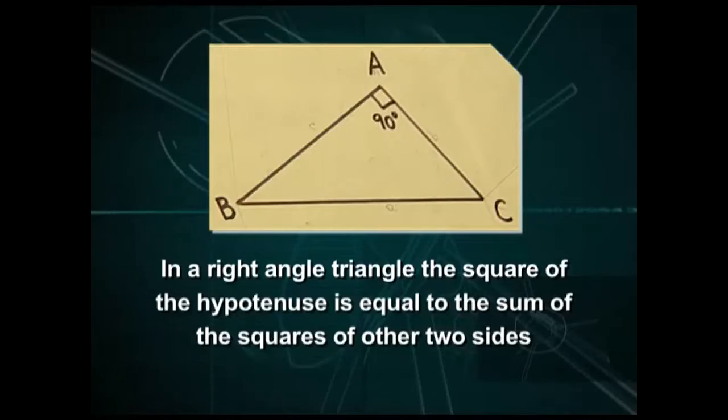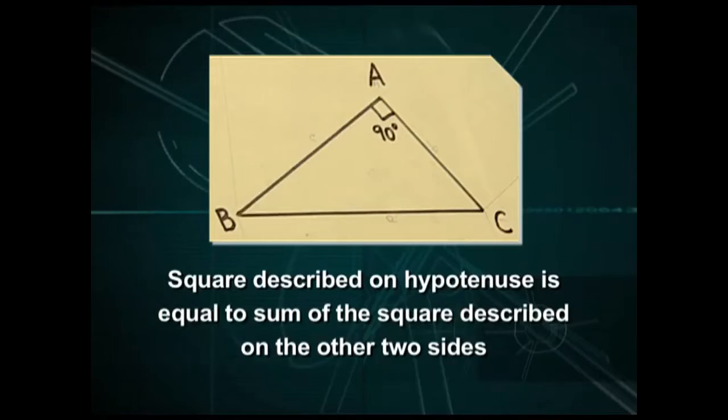Hello students, today we shall perform an activity to verify Pythagoras theorem. First, let us look into what Pythagoras theorem states. It states that in a right triangle, the square of the hypotenuse is equal to the sum of the squares of the other two sides.